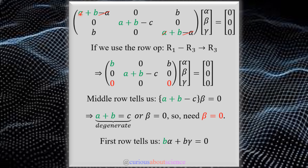Plugging E₂ = a+b into the matrix, the a's cancel on the diagonal. Using row ops — R1 minus R3 as the new R3 — to eliminate an entry, we also eliminate another component, so we'll have free variables again. The middle row gives 0·α + (a+b-c)·β + 0·γ = 0. Setting up the cases, we see that a+b = c would be a degenerate condition, so β must equal zero.